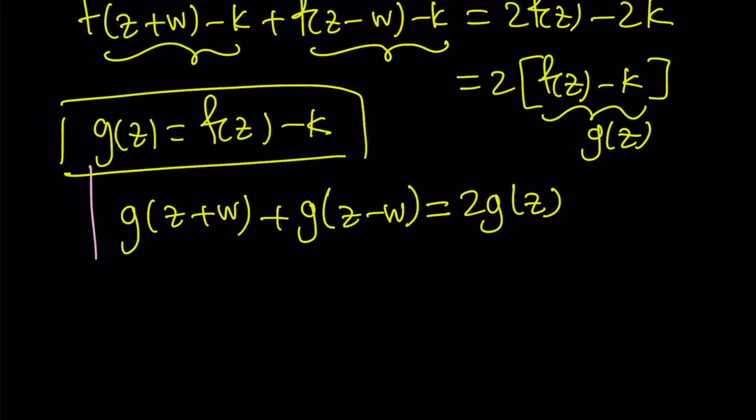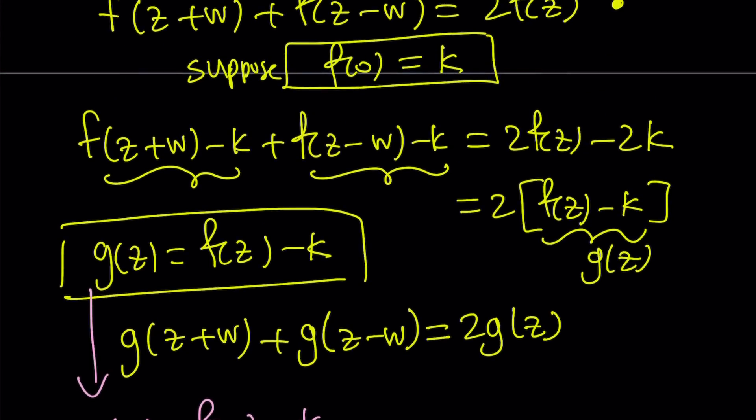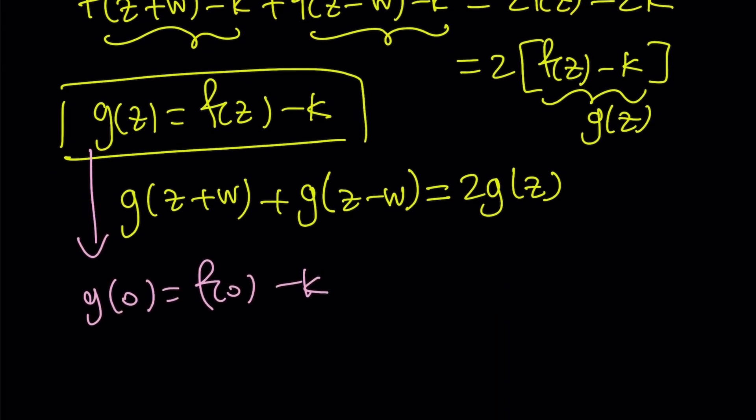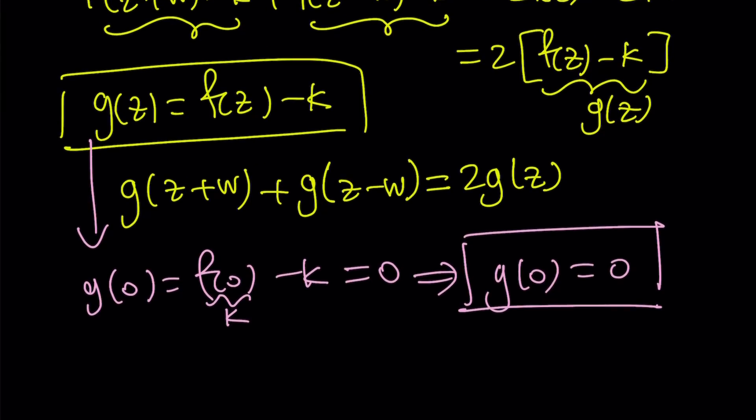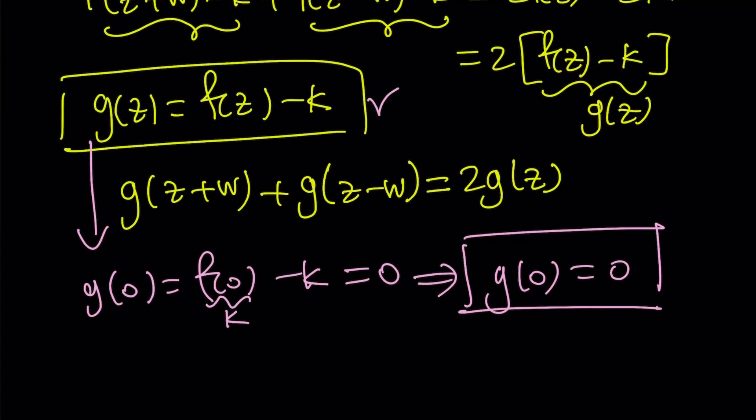From here, g(0) becomes f(0) - k. But what is k? k is f(0). So if f(0) is k, then k - k equals 0. This just implies that g(0) = 0. That's why we define g actually. We need a function that gives us 0 at 0. That's the reasoning for this substitution. I hope that makes sense.